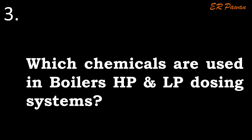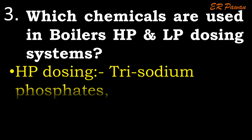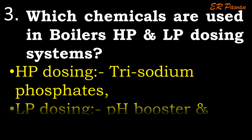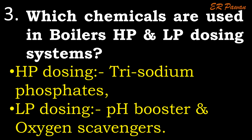Question 3: Which chemicals are used in boilers' high pressure and low pressure dosing systems? For high pressure dosing: trisodium phosphate. And for low pressure dosing: pH booster and oxygen scavengers.